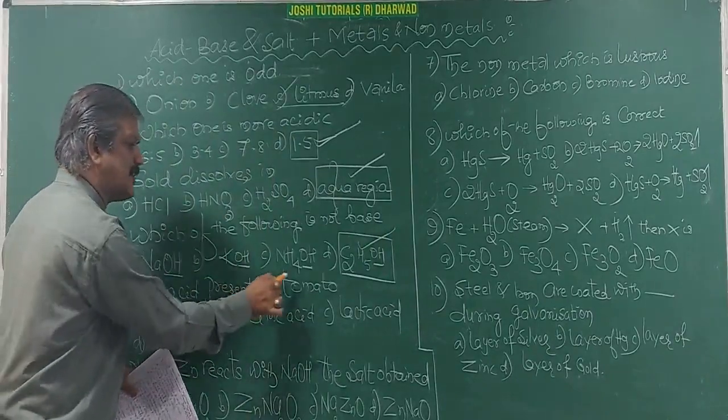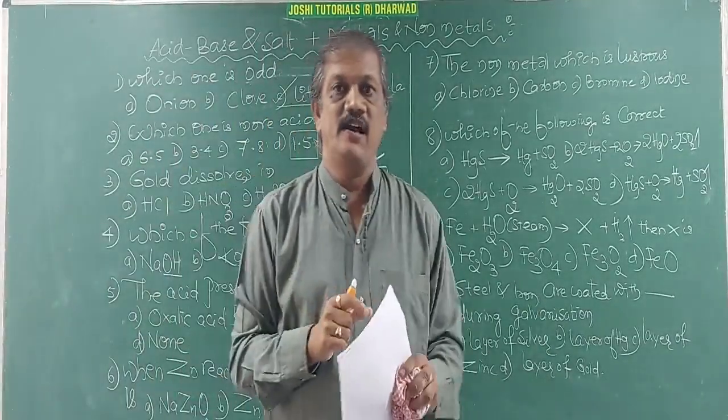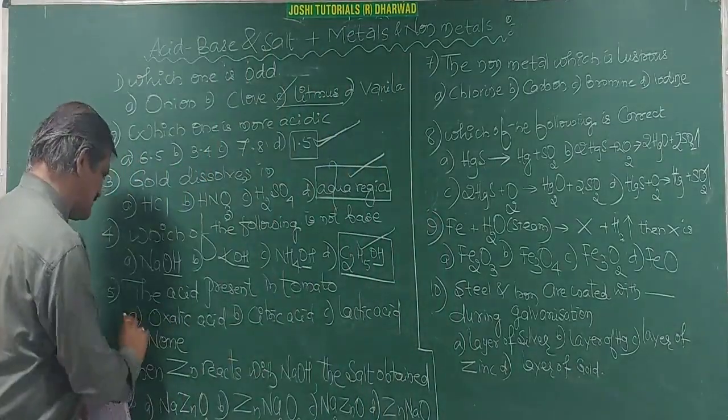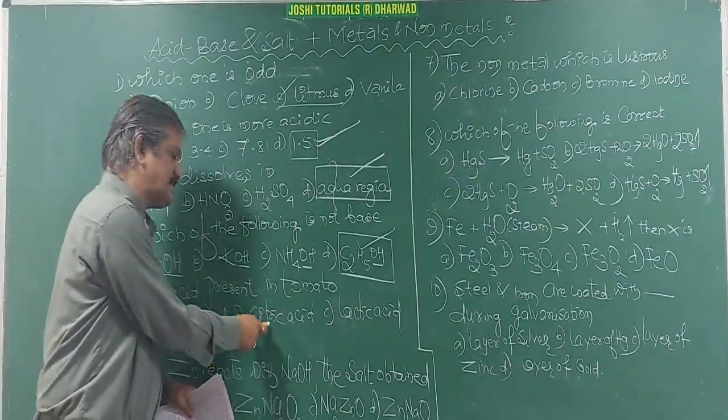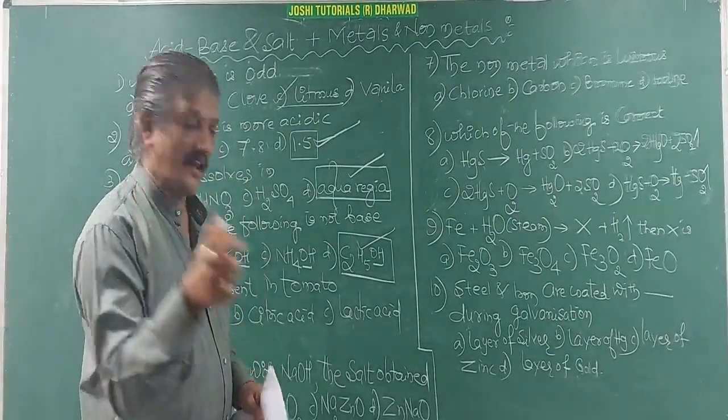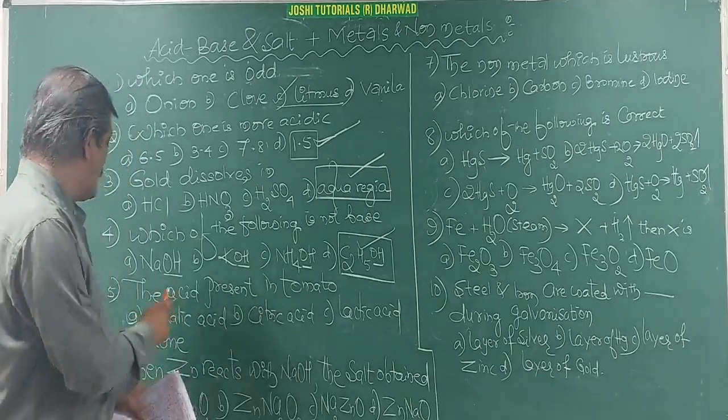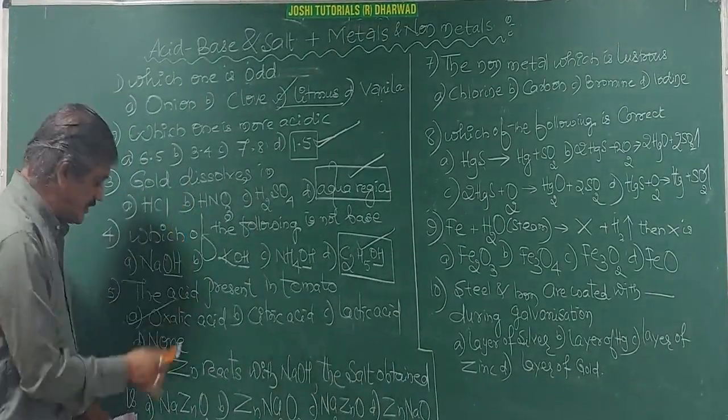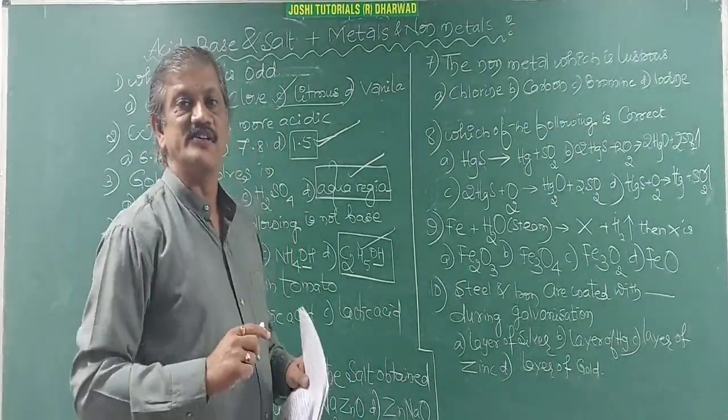The acid present in tomato: you must know the acid's name. It is there in the textbook. Be specific. Oxalic acid. Citric acid present in lemon, lemon juice. Curds: lactic acid. That is why you must know these things. If oxalic acid name is not written, if none of these is given, you have to choose none of these.